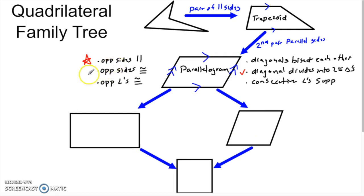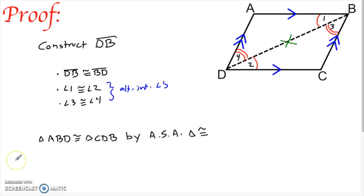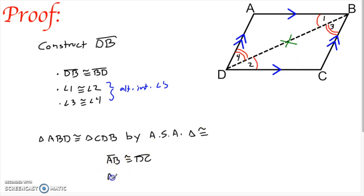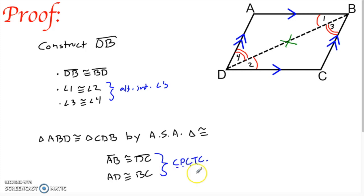We're also poised to prove two more properties quickly. Since these triangles are congruent, we can say AB is congruent to DC — those are corresponding parts of the congruent triangles. We can also say AD is congruent to BC. That's both pairs of opposite sides congruent, and we get those by CPCTC — corresponding parts of congruent triangles are congruent.